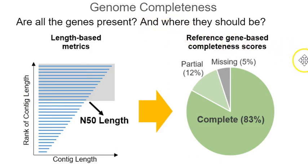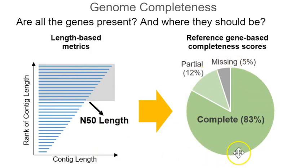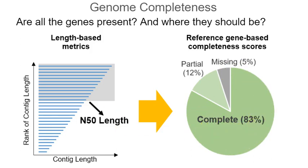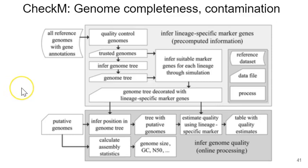Genome completeness is another way to assess the quality of a genome assembly. It asks: are all the genes present? And it can also address whether the genes are where they should be relative to the reference genome. There are length-based metrics like N50, which I mentioned in a previous lecture, but it's a crude measure. Newer genome completeness checkers actually go looking for a core set of genes in your reference strain and look for them in your new target genome. In particular, there's a tool called CheckM, from around 2018 or 2019, which has been integrated into a variety of online platforms and can also be hosted on RON.